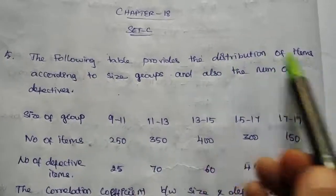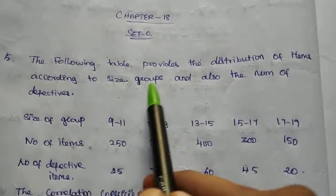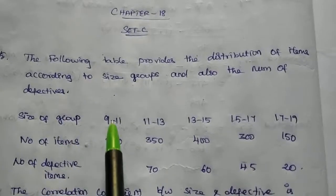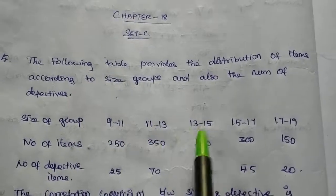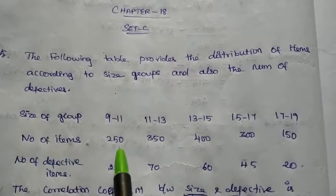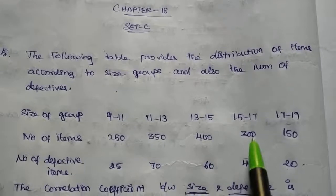The following table provides the distributions of items according to size groups and also the number of defectives. The size of groups: 9 to 10, 11 to 13, 13 to 15, 15 to 17, and 17 to 19. The number of items: 250, 350, 400, 300, and 150.